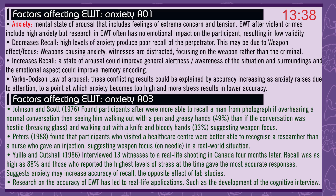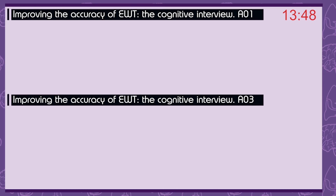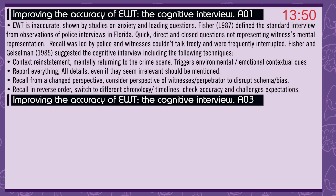Research on the accuracy of eyewitness testimony has led to real-life applications, such as the development of the cognitive interview, improving the accuracy of eyewitness testimony. Eyewitness testimony is inaccurate, shown by studies on anxiety and leading questions. Fisher in 1987 defined the standard interview from observations of police interviews in Florida: quick, direct, and closed questions, not representing the witness's mental representation. Recall was led by police, and witnesses couldn't talk freely and were frequently interrupted. Fisher and Geiselman in 1985 suggested the cognitive interview.